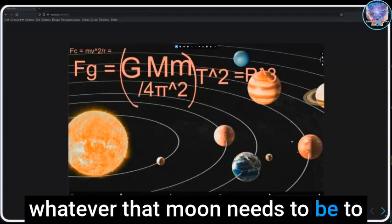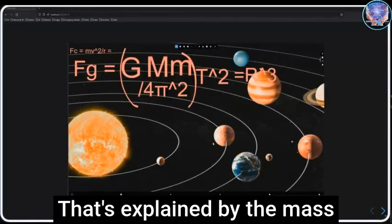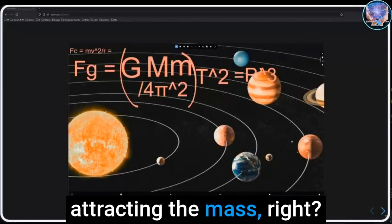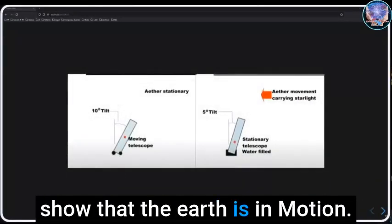Did you follow the steps of getting Jupiter's mass off the ratio of the sun, like following Kepler's laws? Because if so, it's going to output whatever that moon needs to be to fit that orbital period into that. That's what it's going to output. That's explained by the mass attracting the mass, right? There should be some experimental evidence that's put forward to show that the earth is in motion.